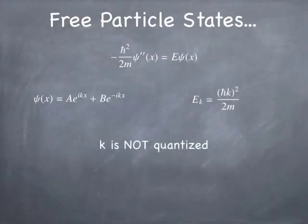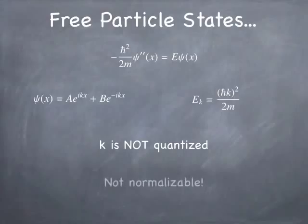A couple of things are different with k in the free particle state as opposed to the infinite square well. First, k is no longer quantized — there are no boundary conditions for a free particle, so there's no requirement that the wave function go to zero at any particular place, meaning k can be anything. The other problem is that these wave functions can't be normalized, so they're not really proper wave functions in the sense that they correspond to realistic situations, but they are important as a mathematical model.